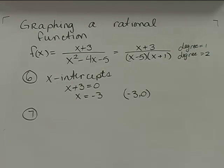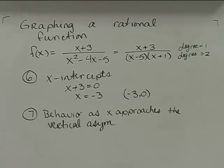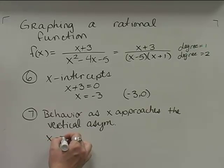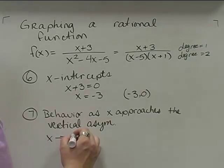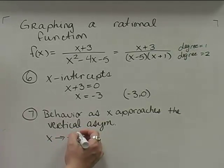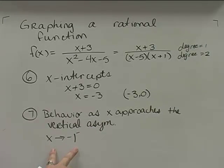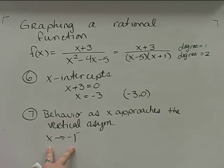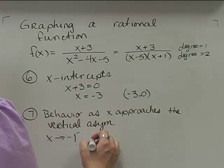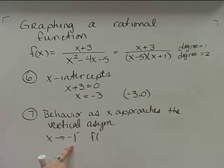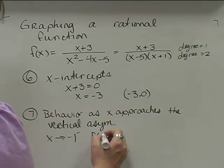Next up, we're going to find the behavior as x approaches each asymptote. To find the behavior as x approaches the vertical asymptote, I've got to figure out what happens on either side. This notation — as x approaches negative 1 — means I have to approach it from both sides. The little negative superscript means approaching from the left-hand side. I'm going to choose a number on the left side of negative 1 but really close to it — negative 1.1.